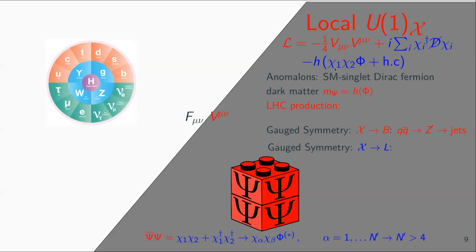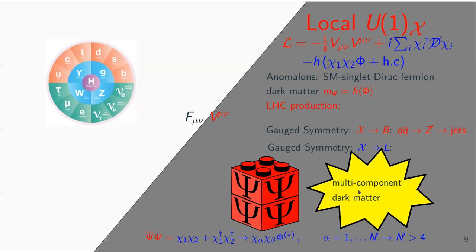In general, the new fields impose a new anomaly condition, and we need a set of new chiral fermions in order to have anomaly cancellation properly accounted for. In this sense, we expect the dark sector to have many extra chiral fermions, like in the Standard Model. In addition, this can imply the existence of several dark matter candidates, what is called multi-component dark matter.